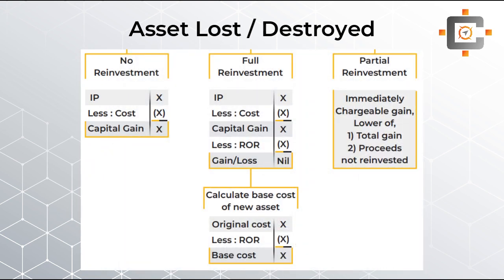If the person took insurance and received insurance proceeds, we need to ask what was done with that money. There are three possibilities. If the person did not reinvest the amount, the treatment is simple: insurance proceeds less cost equals chargeable gain. This is essentially a penalty for not reinvesting — a capital gain arises and tax is levied.